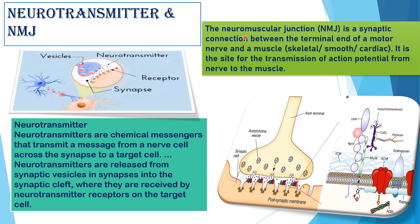The Neuromuscular Junction or NMJ is a synaptic connection between the terminal end of a motor nerve and a muscle — that means skeletal, smooth, or cardiac muscle. It is the site for the transmission of action potential from nerve to muscle. In the diagram: this is the axon terminal, this is the acetylcholine vesicle, this is the synaptic cleft, and this is the post-synaptic membrane. The mechanism here is not in your syllabus — just read this portion as neurotransmitter.